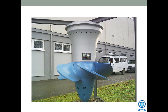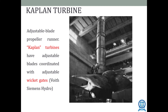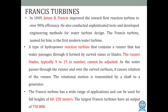Kaplan turbines have adjustable blades coordinated with adjustable wicket gates. The Francis turbine, improved by Francis to achieve 90% efficiency, is a reaction turbine with a runner having water passages formed by curved wings or blades. The runner blades — typically 9 to 19 in number — cannot be adjusted. As water passes through the runner over the curved surfaces, it causes rotation, and the rotational motion is transmitted by a shaft to the generator.